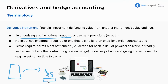Maybe this contract says if the value of this bar of gold goes down, then the value of this piece of paper goes up. There's no initial net investment required, or one that is smaller than ones for similar contracts. Basically, you don't need to invest in the actual underlying — you just need to buy or write this piece of paper. You can be the contract writer with no net investment.